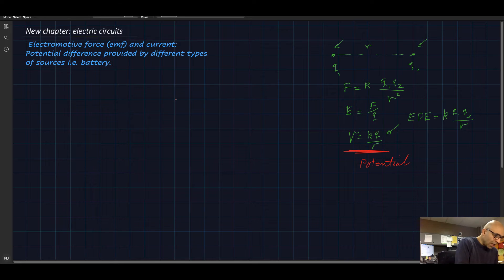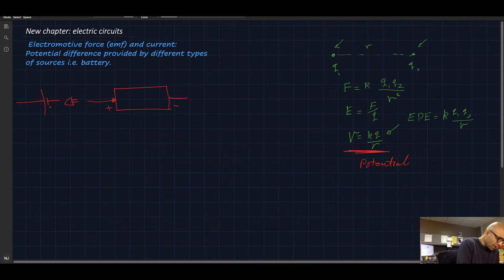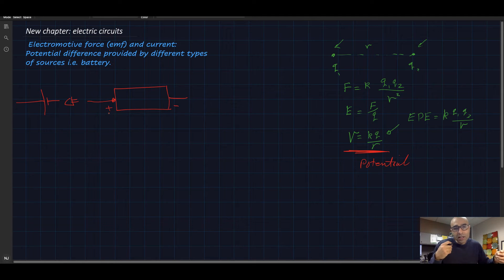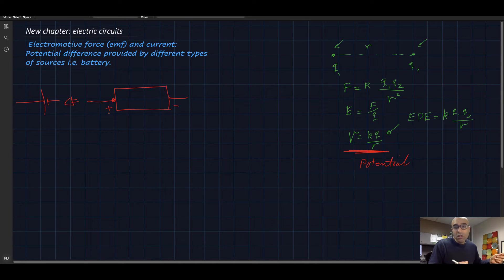So the battery looks like something like this. You've seen a battery many times before — it has a positive side and a negative side. In a circuit, we think of it this way: the negative side is the small line, and the positive side is the big line. Notice that the battery is polar, which means it has a positive and negative side. Many electric instruments do not have polarity — they do not care which direction they are connected in the circuit. But some do care about that, and if you connect them wrong, you may actually damage the instrument or the circuit.